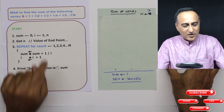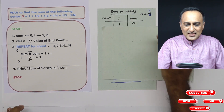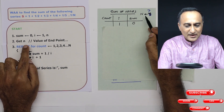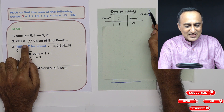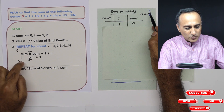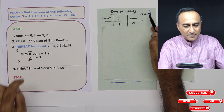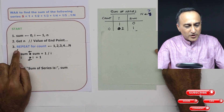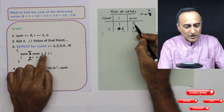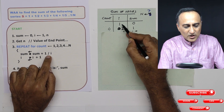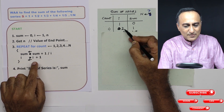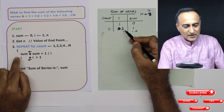Let's try it out with some value of the endpoint. Let us say n is 7. First step: sum is 0, i is 1. When we get the value of n as 7, repeat for count equal to 1 to 7 — that means it will execute this particular block seven times. Sum is sum plus 1 upon i; i is 1, so 1 upon 1 is 1. Sum becomes 1, then i becomes 1 plus 1, so i has become 2.